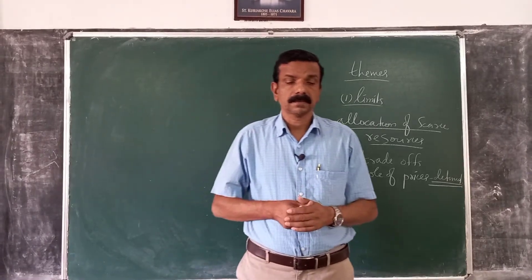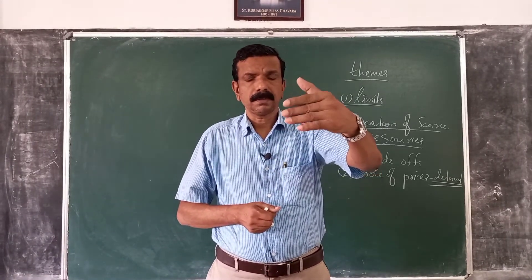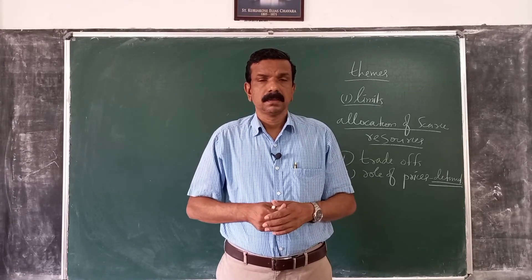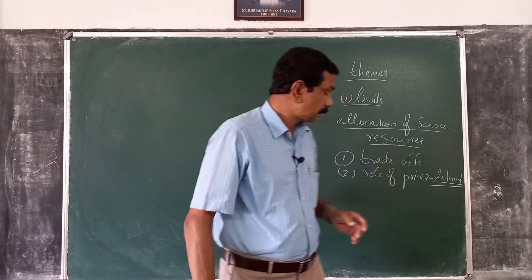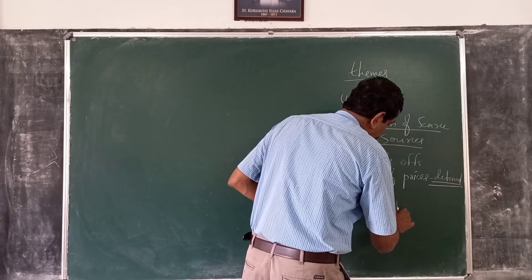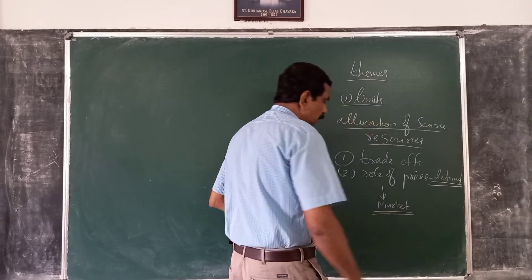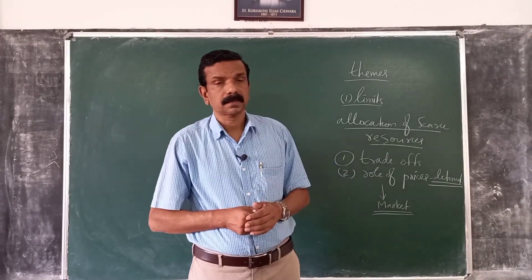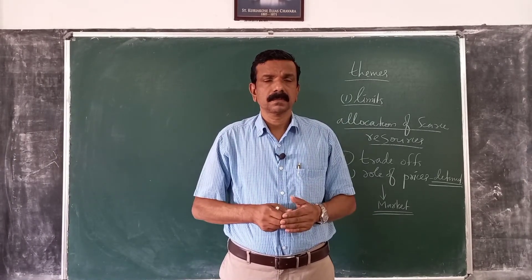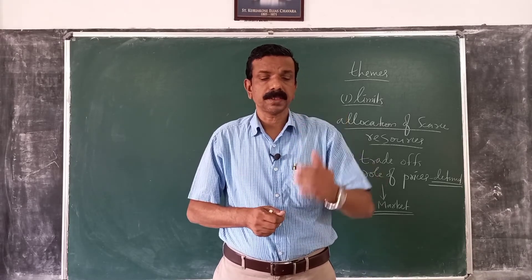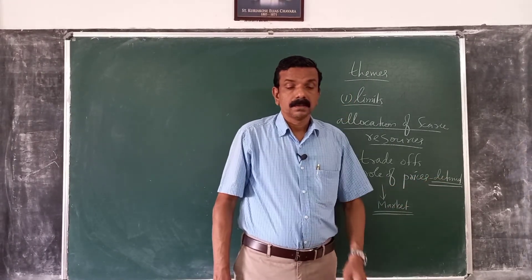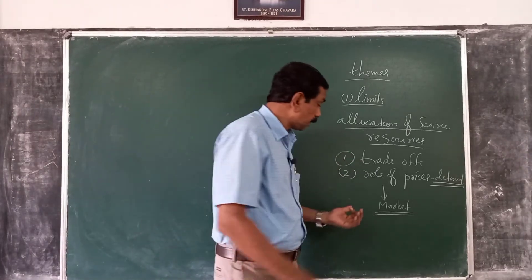In a planned socialist economy, prices are determined by the government and the market has no role. But in a free market economy, prices are determined in the market by the interaction between consumers, business firms, and resource owners. These interactions occur in the markets, so the central role of markets is the third major theme in microeconomics.